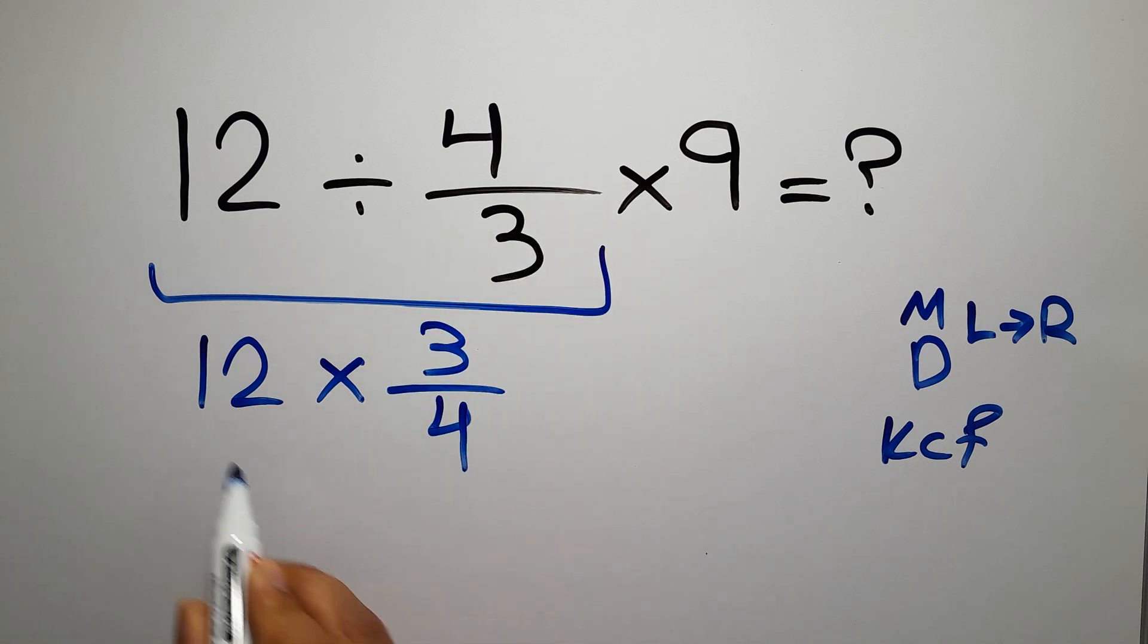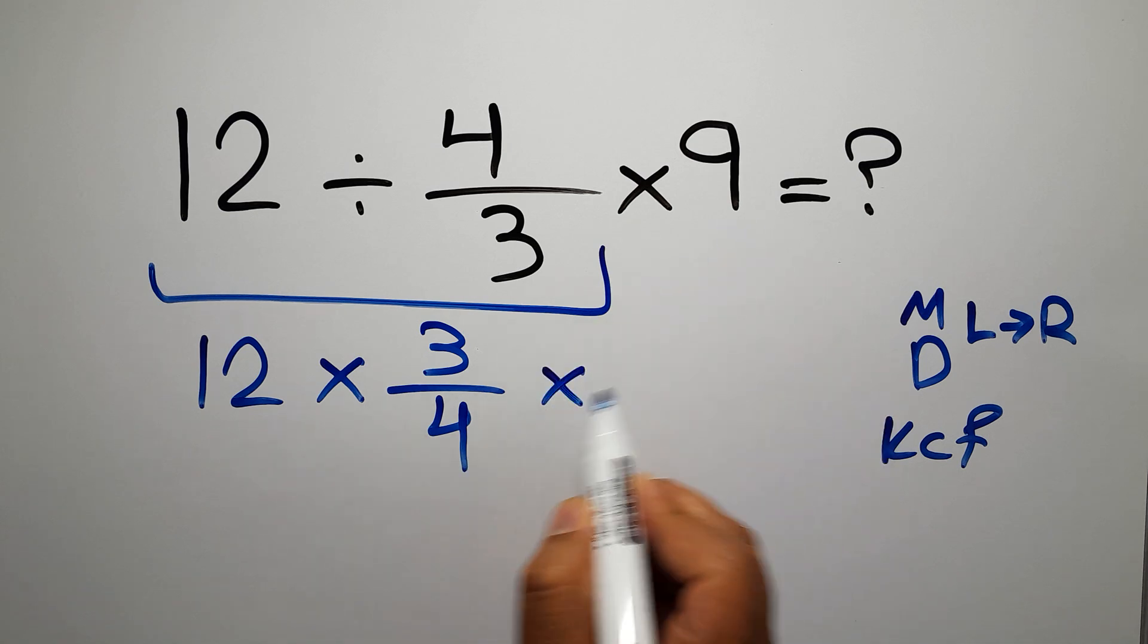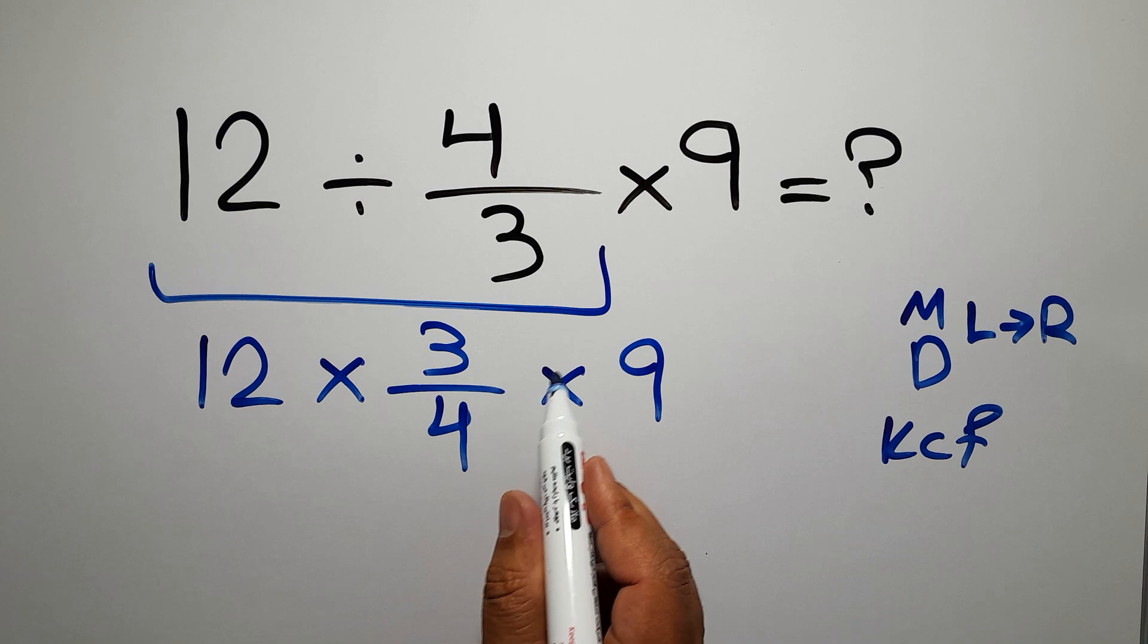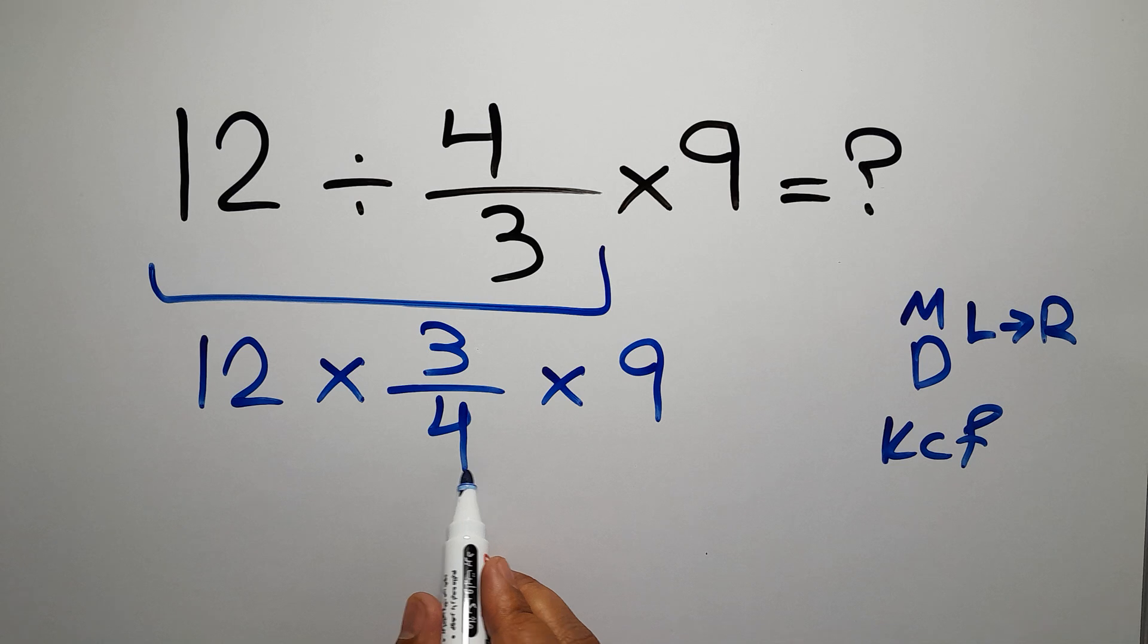So we have 12 times 3 over 4 and times 9. Now we have two multiplications. First, this multiplication: 12 times 3 over 4.